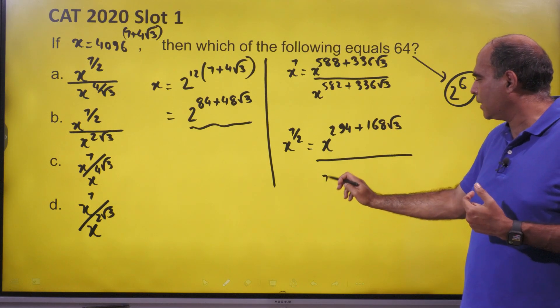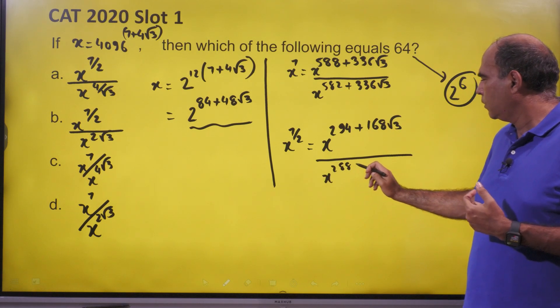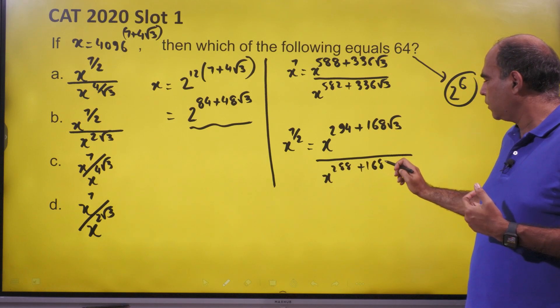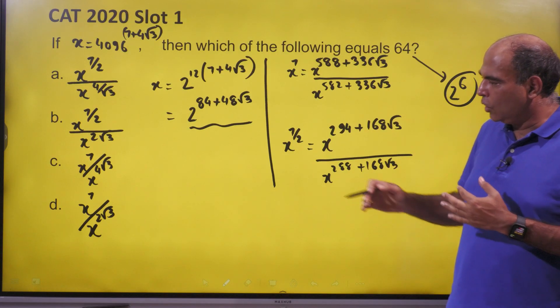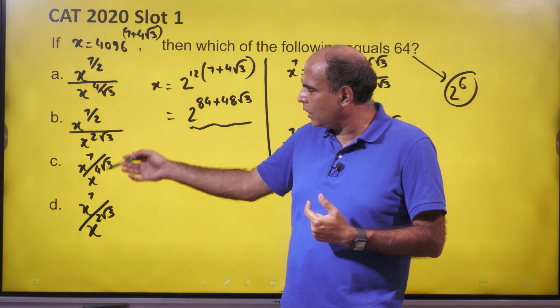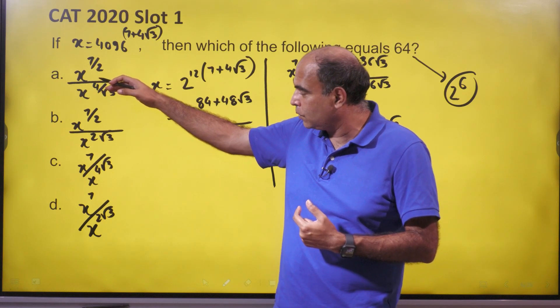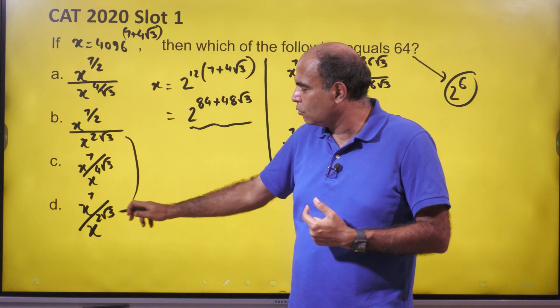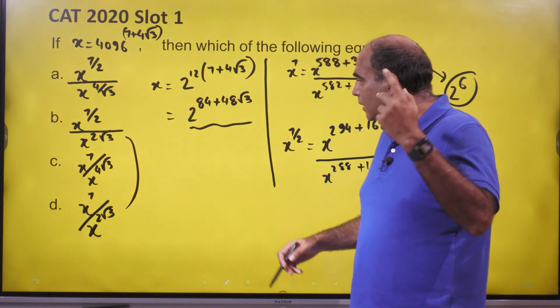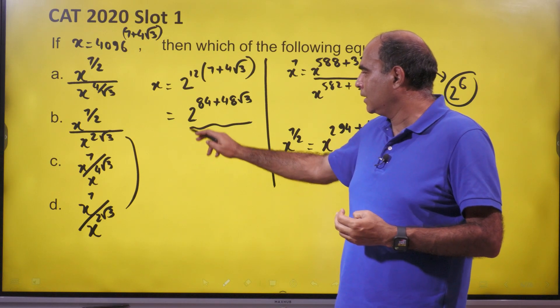So my denominators are x raised to 2 root 3, x raised to 4 root 3, and then there's one more of x raised to 4 by root 3. Let's first evaluate x raised to 2 root 3.